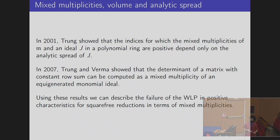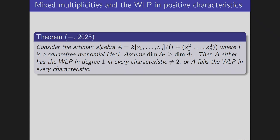Using these results we can describe the failure of the WLP in positive characteristics for square-free reductions — a square-free monomial ideal plus the squares of the variables — in terms of mixed multiplicities. The theorem states: if we have an Artinian algebra A as the quotient of the polynomial ring by a square-free monomial ideal and squares of the variables, and the dimension of the second-degree component of A is higher than the first, then either A has the WLP in degree one in every characteristic except two, or A fails the WLP in every characteristic.